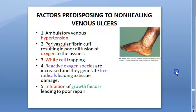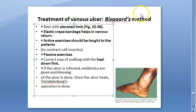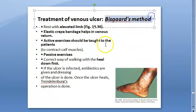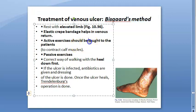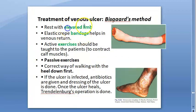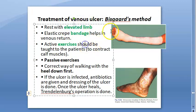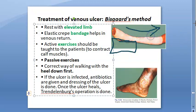How will you treat venous ulcers? Biscard's regimen — there are only three things to know. First, rest with elevated limb: you elevate the limb so venous return happens. Put a pillow and sleep so the blood returns to the heart, reducing venous stasis. Second, elastic crepe bandage, which helps in venous return.